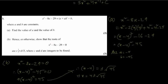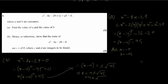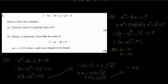The answer needs to be written with root 5. So 45 can be broken down: 45 is 9 times 5, and 9 is 3 squared. So root 45 is root of 3 squared times 5, which equals 3 root 5. Therefore x equals 4 plus or minus 3 root 5.